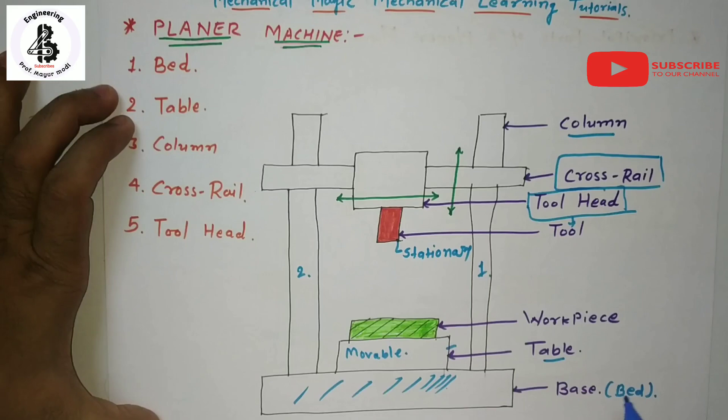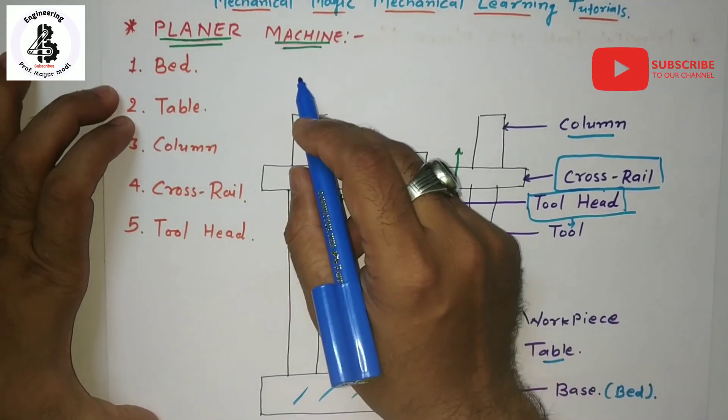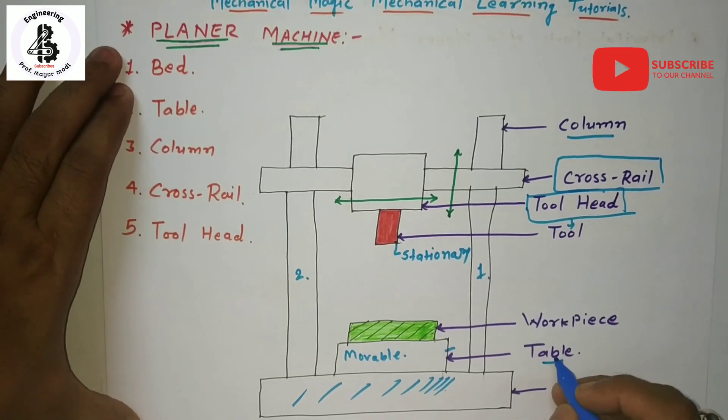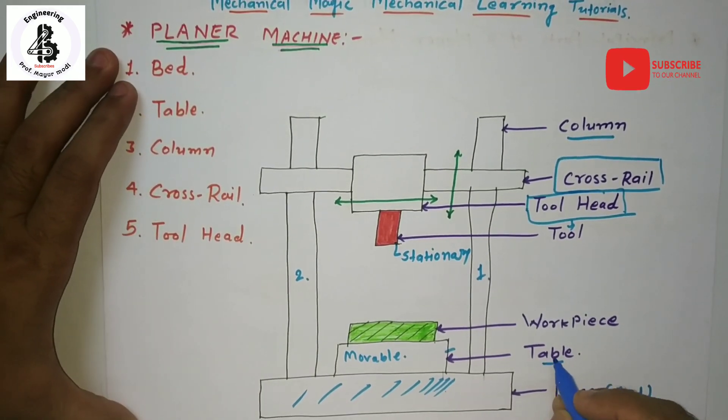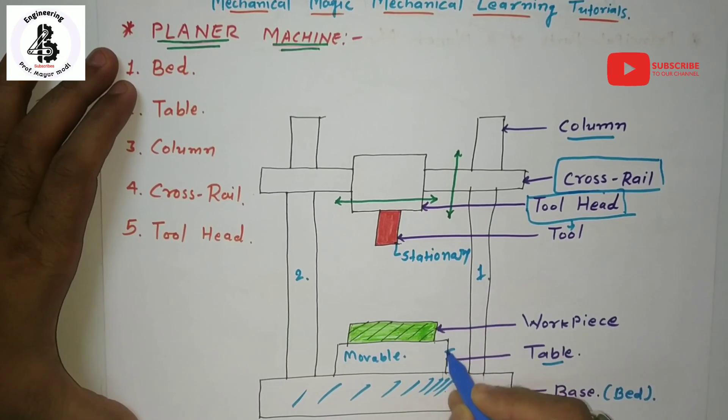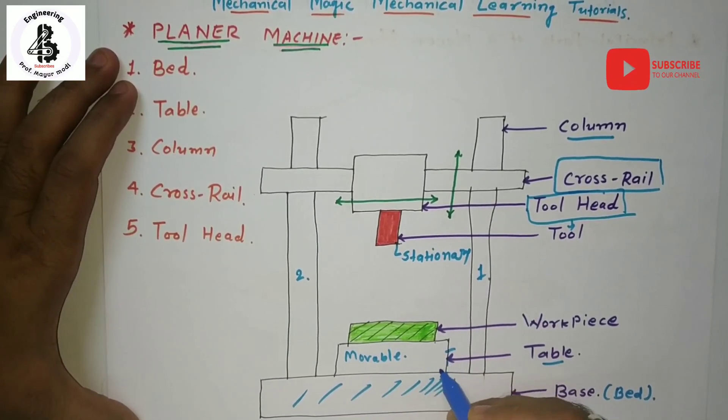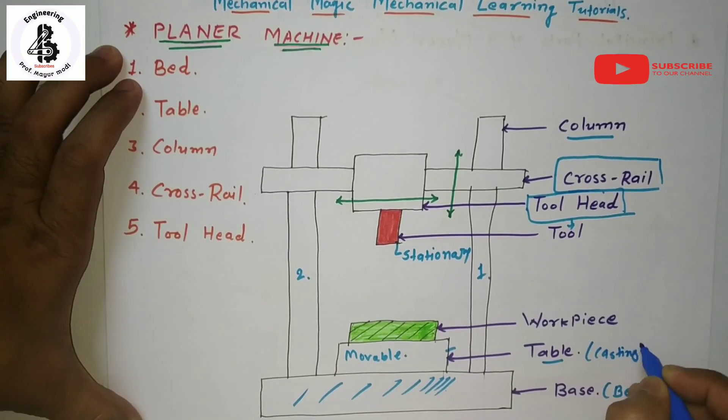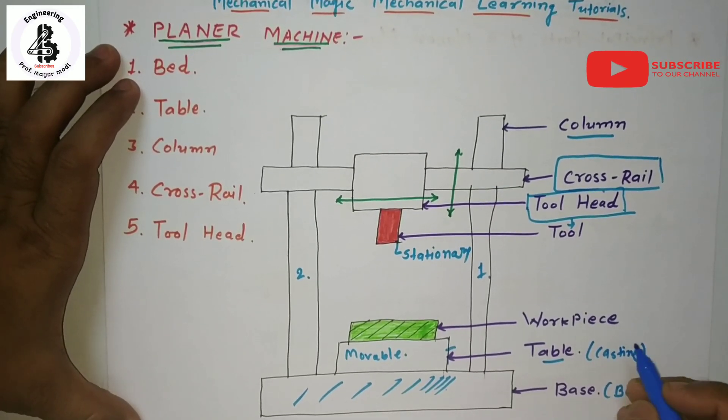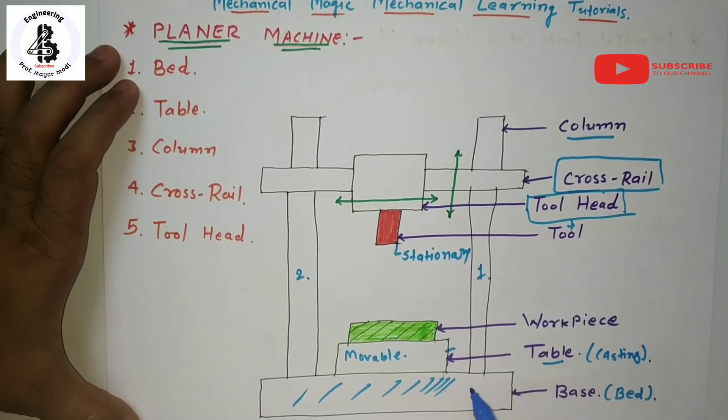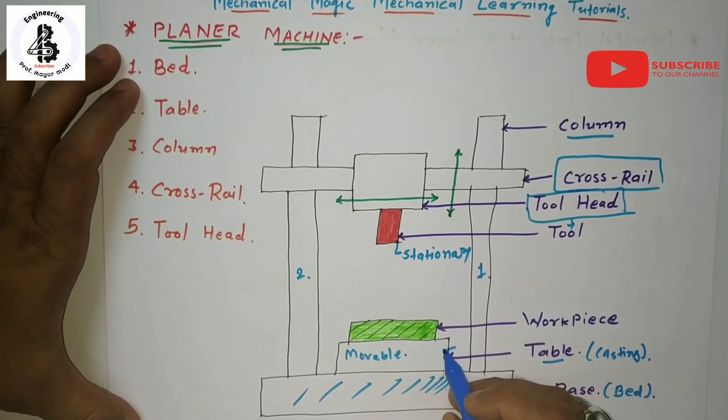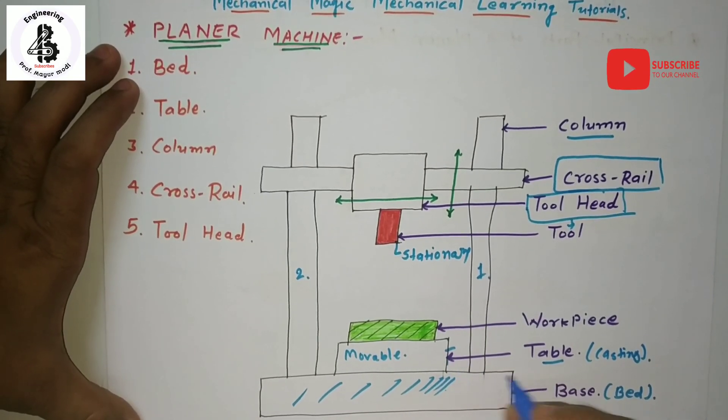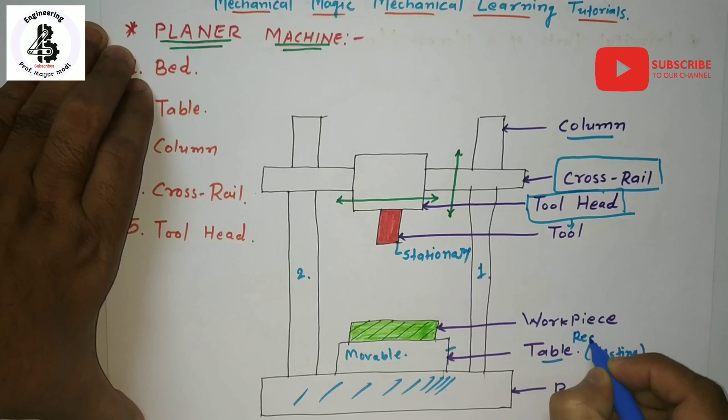Second one, the table. Generally the table is a heavy rectangular shaped component which is made of castings and has good strength for restraining the vibrations and the cutting force. This table has a reciprocating motion.